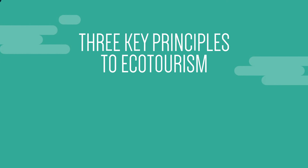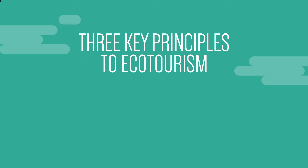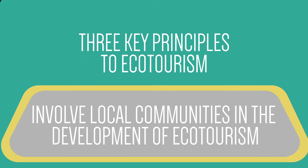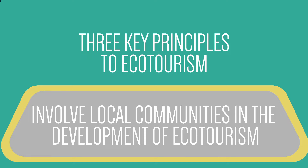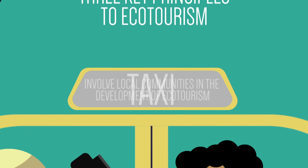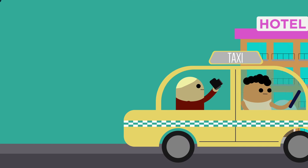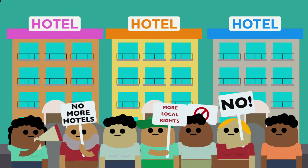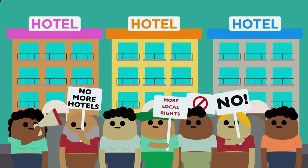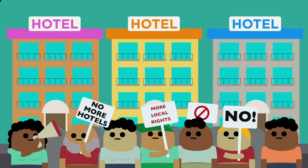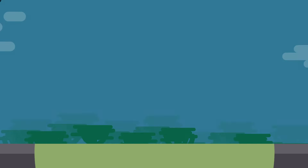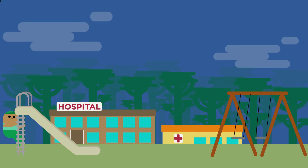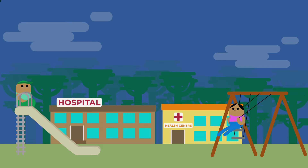There are three key principles to ecotourism. The first key principle is to involve local communities in the development of ecotourism. It is important that communities maintain control over the level and kind of tourism they want in their land. Money from tourism projects should be invested in the communities who are hosting tourists, rather than just to operators based outside the area.